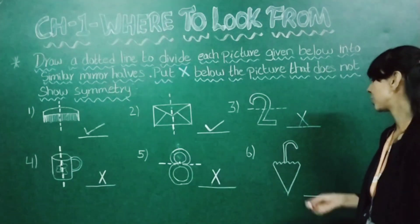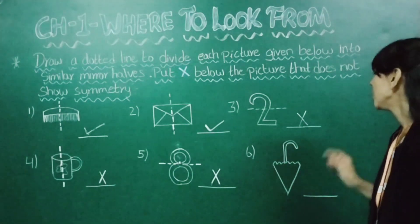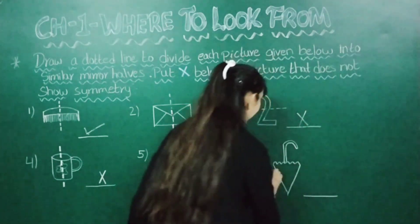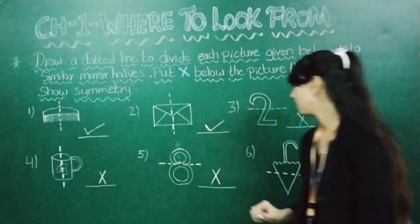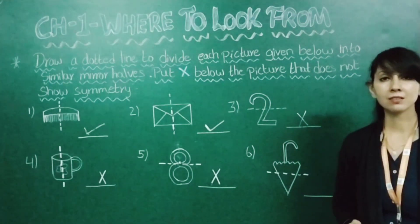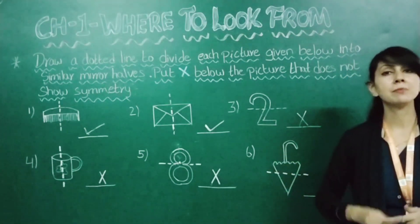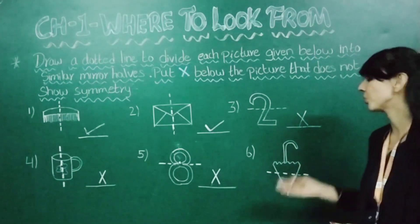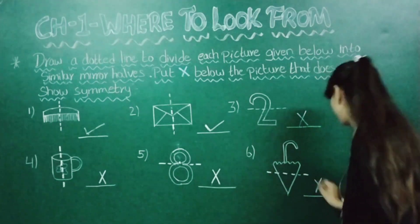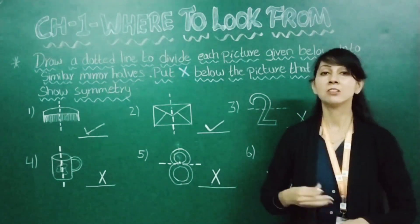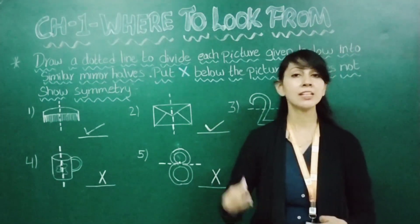Next picture is an umbrella. If we split it with a dotted line, do we get a mirror half? No — both parts are unequal, we are not getting a mirror half. It does not show symmetry, so we place a cross.